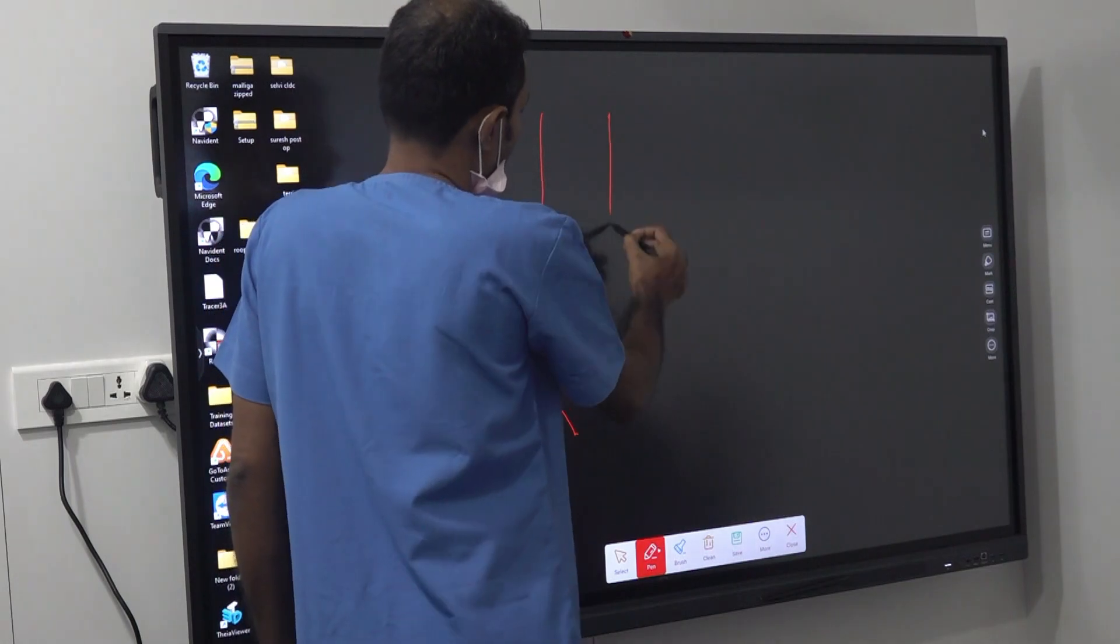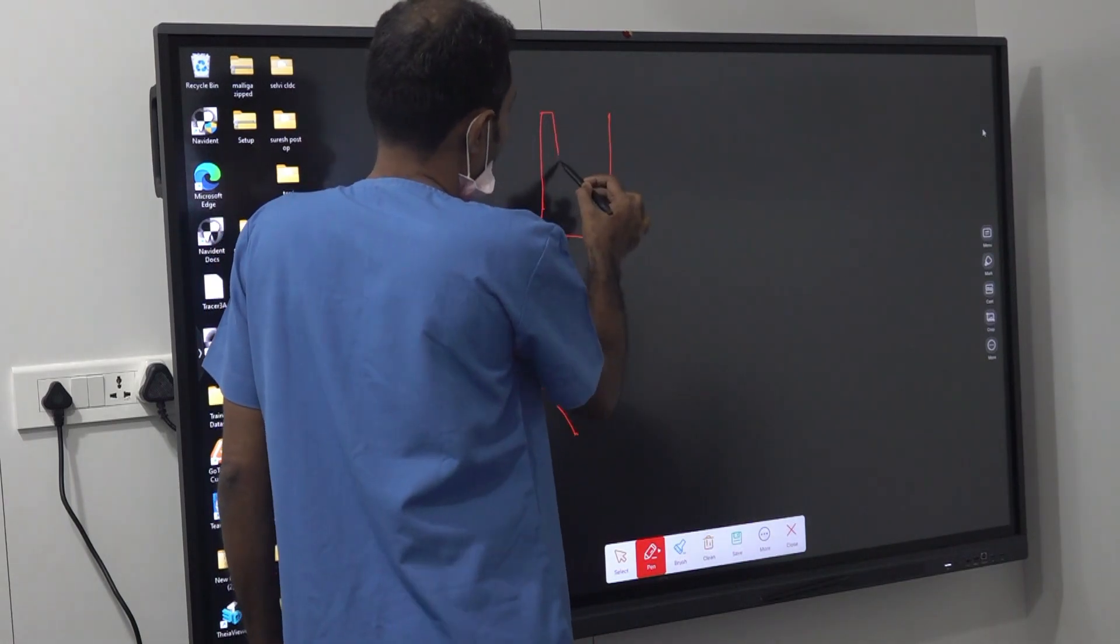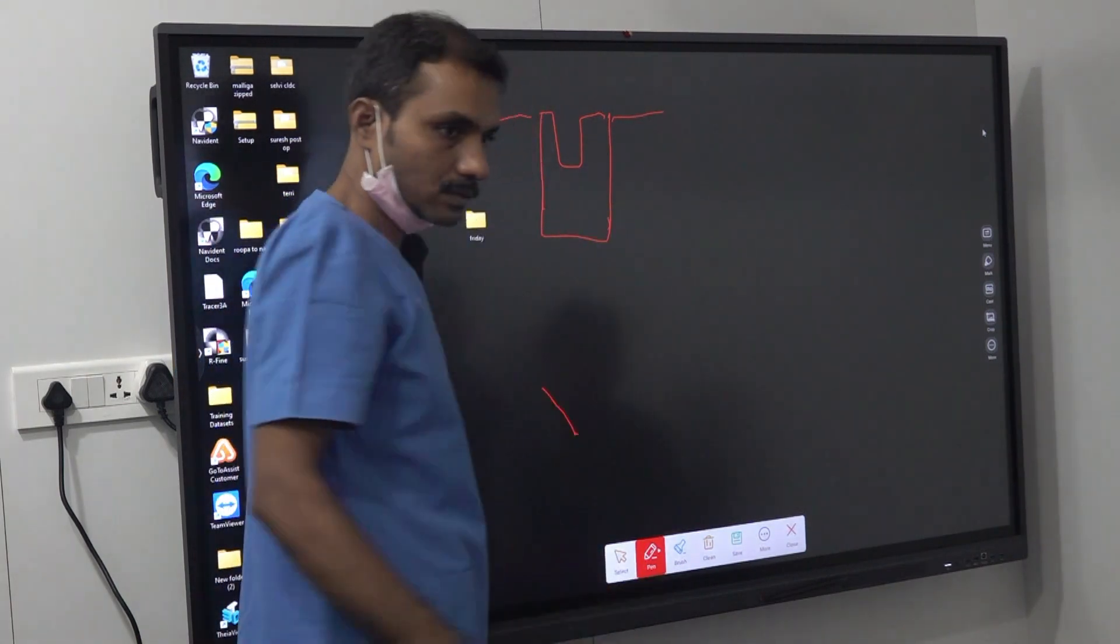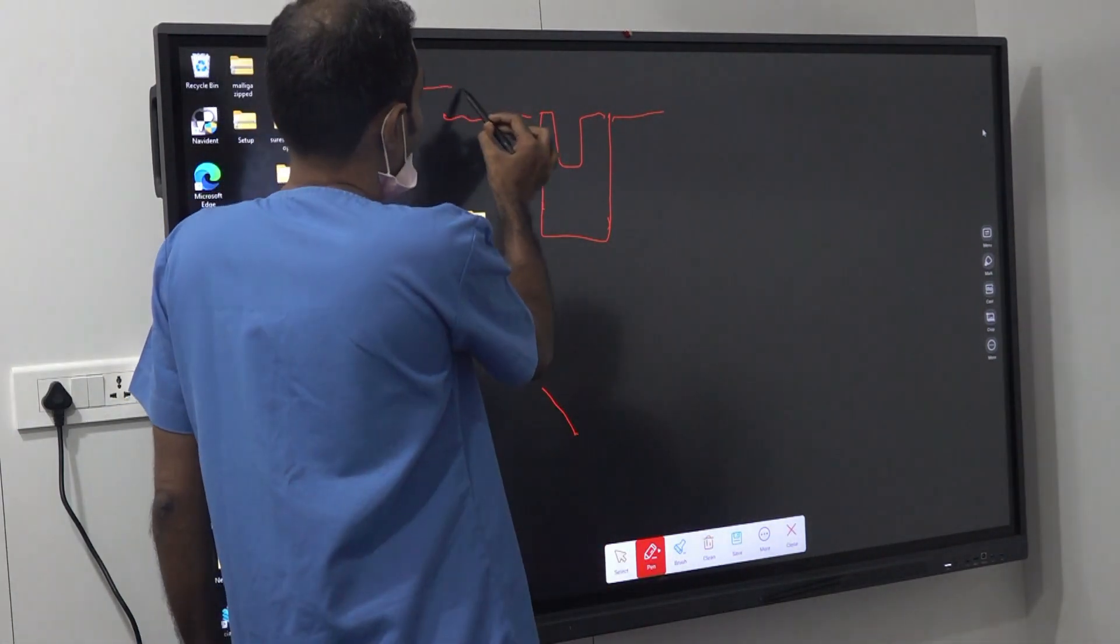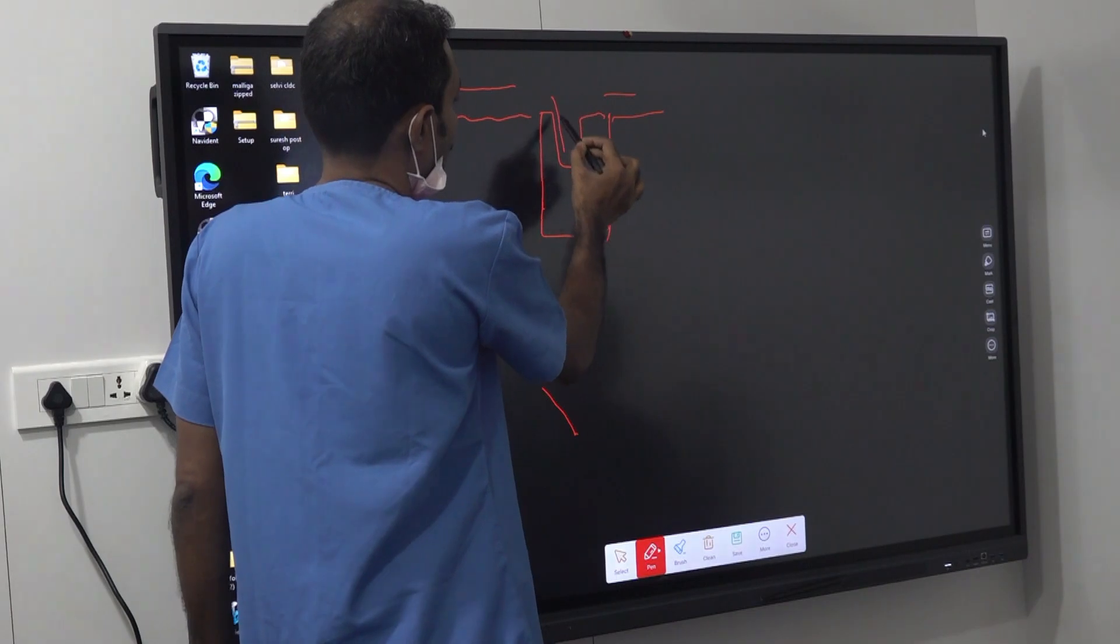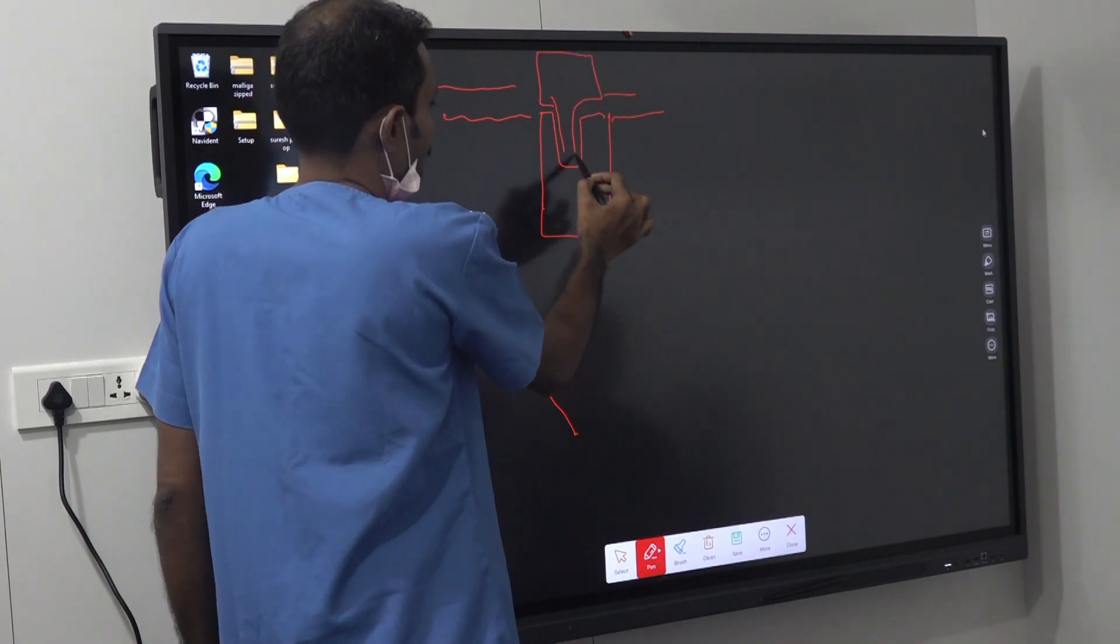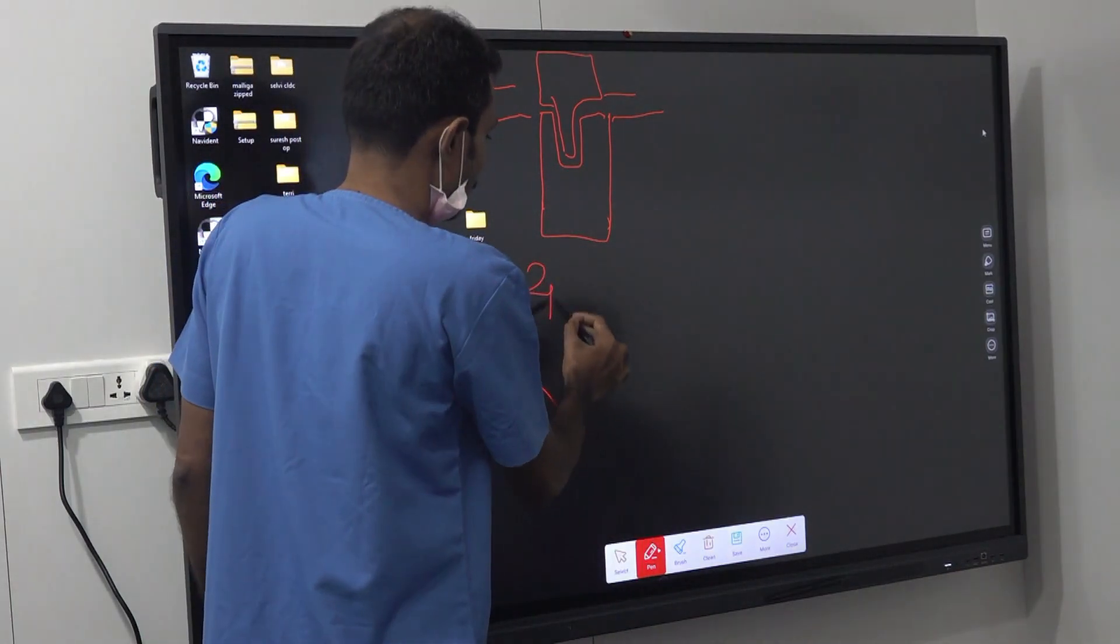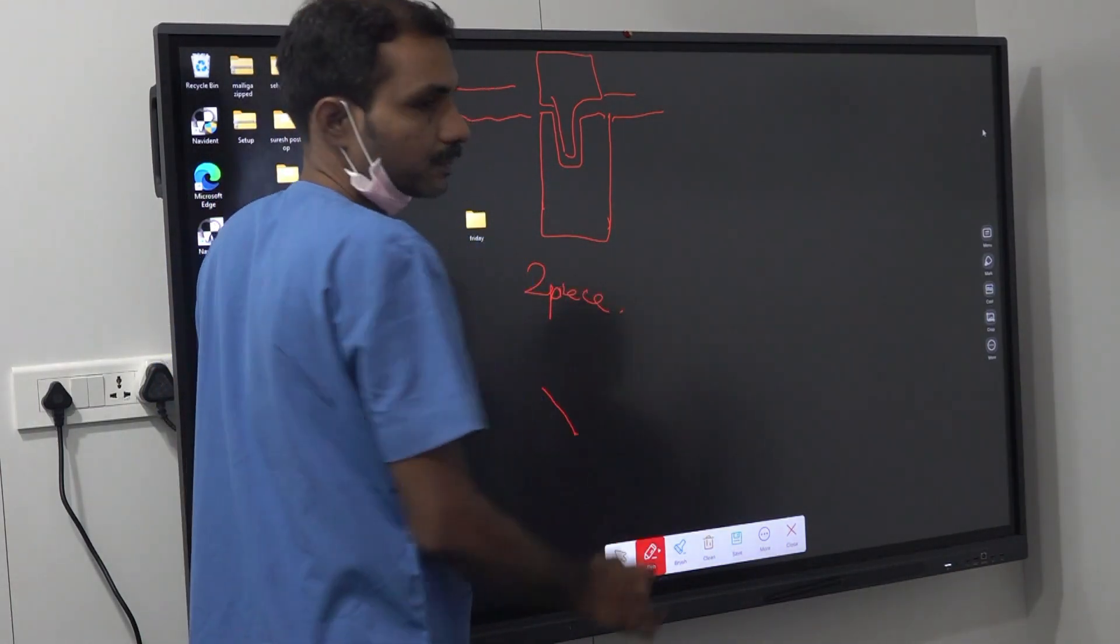This is a conventional implant. This is bone level. Over this, the gums will come. The abutment will attach here. Any doubt in this? This is conventional implant. This is called two-piece.